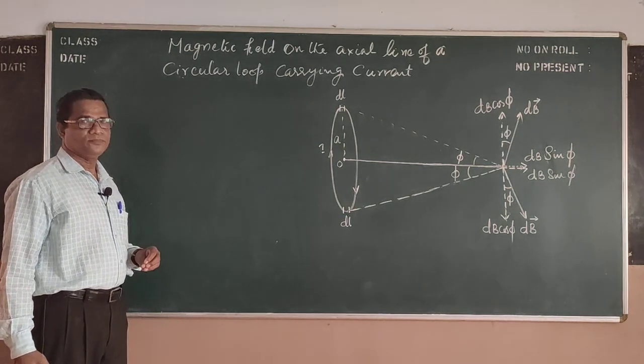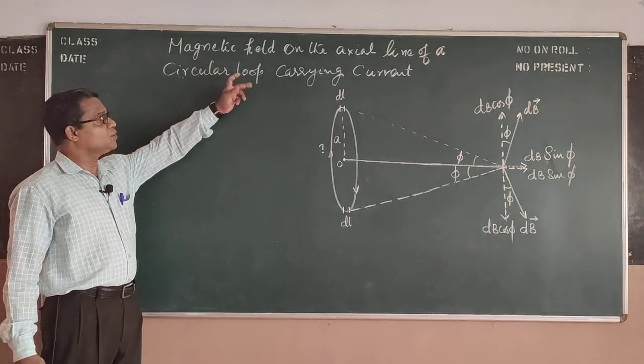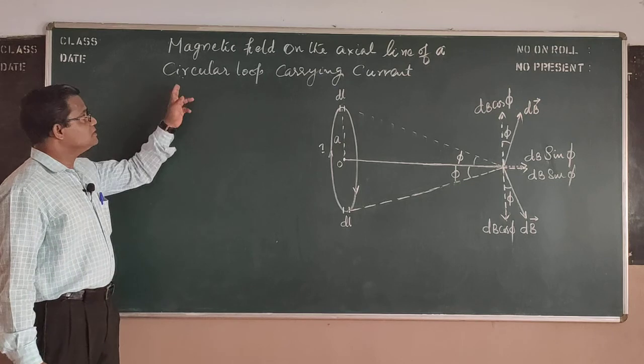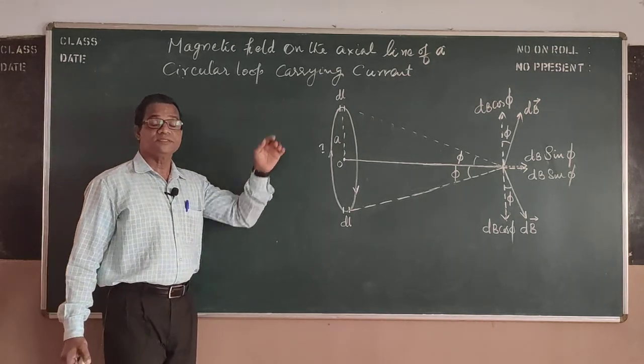That is magnetic field on the axial line point of a circular loop carrying steady current.